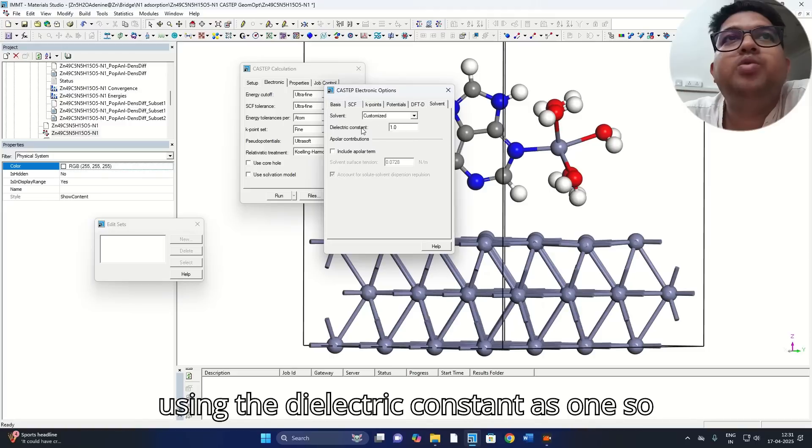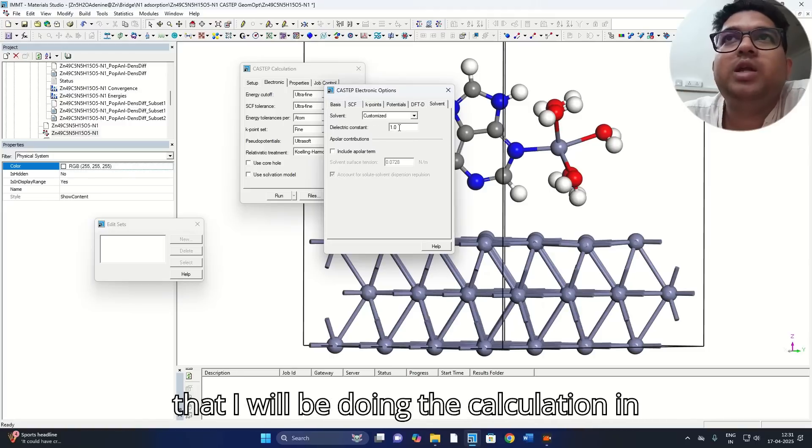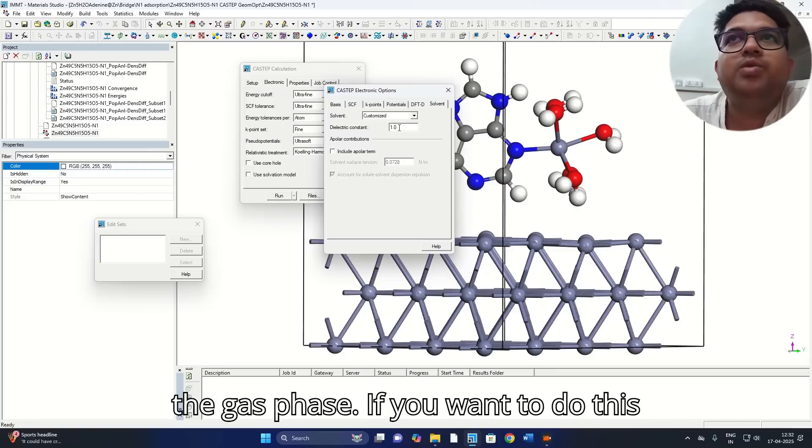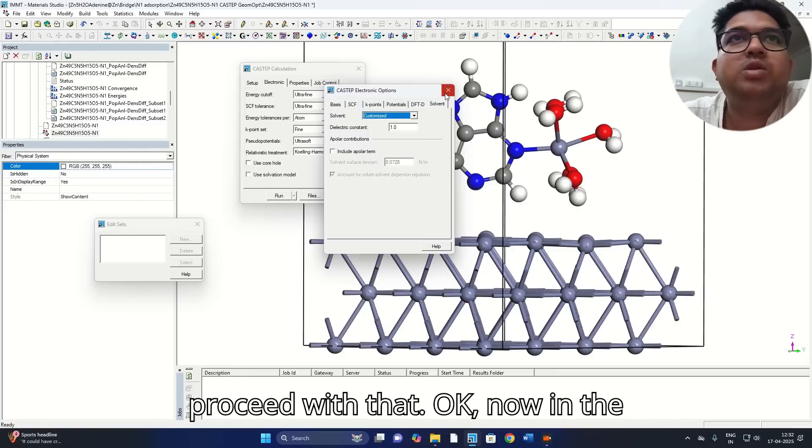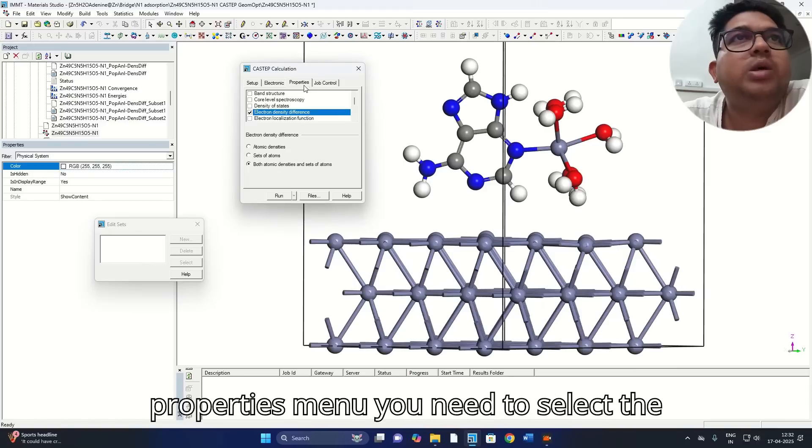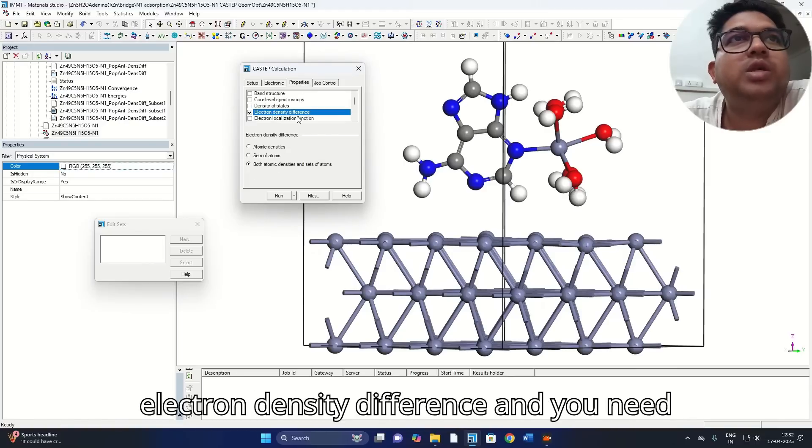Not changing anything in solvent. I'm using the dielectric constant as one so that I will be doing the calculation in the gas phase. If you want to do this calculation in some solvent phase, you can choose the solvent from here and proceed. Now in the properties menu, you need to select the electron density difference and you need to tick on both atomic densities and the set of atoms.